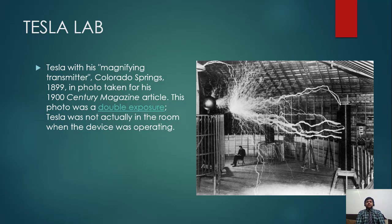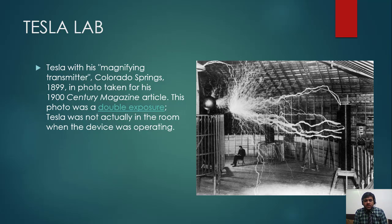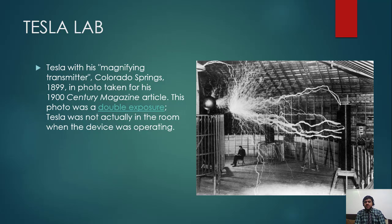Here I have put one picture to increase your interest. You can see Tesla with his magnifying transmitter at Colorado Springs in 1899, in a photo taken for a 19th century magazine article. This photo was actually a double exposure — Tesla was not in the room when the device was operating. They took one picture of the operating device and another of Tesla sitting without operation, then merged both photos.